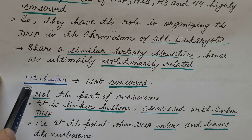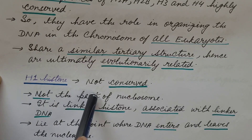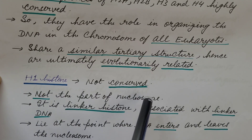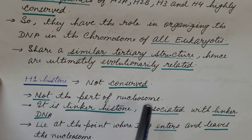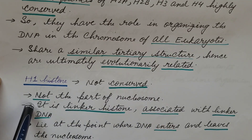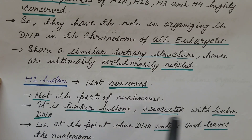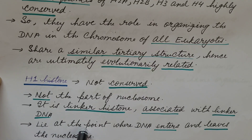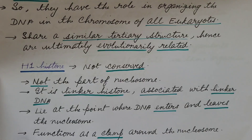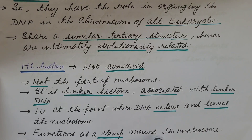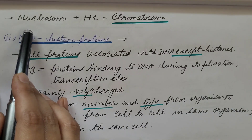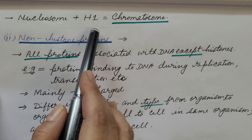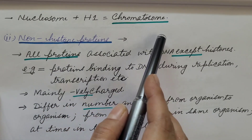If we talk about H1 histone, these are not conserved but show variation between species. H1 is not part of the nucleosome. It is a linker histone associated with linker DNA, and it lies at the point where DNA enters and leaves the nucleosome. It also functions as a clamp around the nucleosome, restricting the DNA into its place. The nucleosome along with H1 histone protein is known as chromatosome.